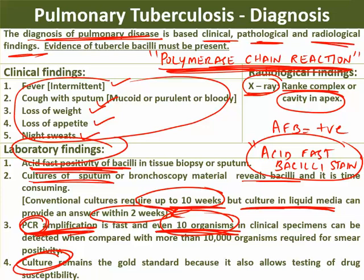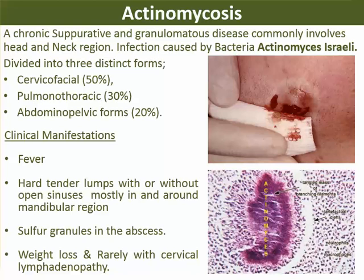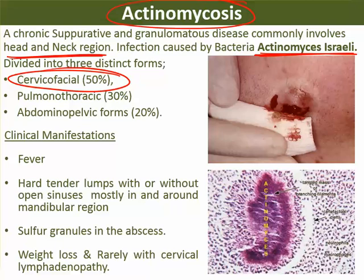Moving on to actinomycosis — this is a bacterial infection caused by the bacterium Actinomyces israelii. It is relevant for dental students because it comes in the head and neck region. It is most commonly seen in the cervicofacial region, accounting for 50% of infections. Other regions affected include the pulmo-thoracic region and the abdominal-pelvic region.